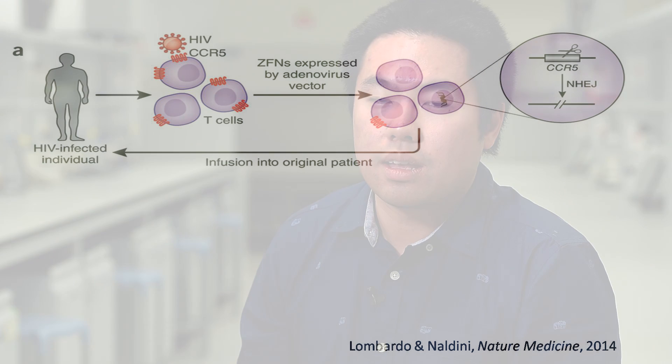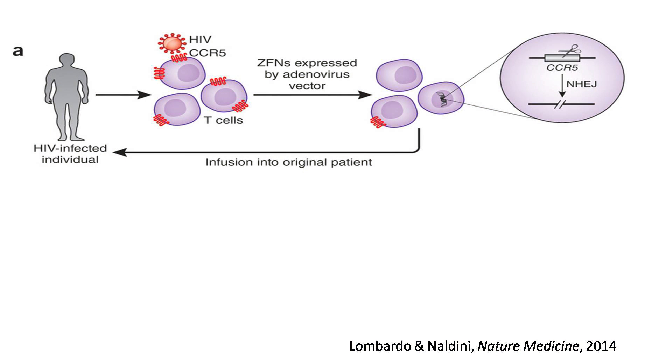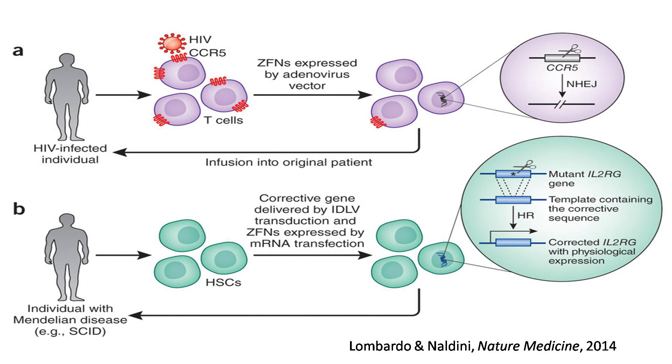One example is the CCR5 gene, which is required for HIV infection. A naturally occurring mutant version of this gene is found in Europe and Western Asia, and people defective in this gene are resistant to HIV infection. After understanding the mechanism of CCR5 and HIV infection, clinical trials are underway right now to delete this gene in patients to try to control the disease. On the other hand, disease-causing mutations can be corrected using sequences found in healthy individuals to completely cure some diseases, hopefully.